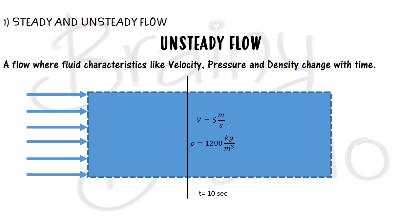If the values change like this, such a flow is called unsteady flow. That covers the first category of steady and unsteady flow. The second category is uniform and non-uniform flow.